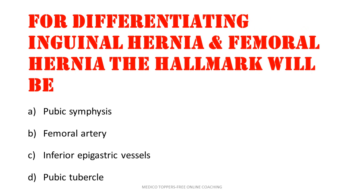Differentiating inguinal hernia and femoral hernia — the hallmark will be pubic symphysis, femoral artery, inferior epigastric vessels, or pubic tubercle. Which landmark do we use to differentiate them? The answer is pubic tubercle.